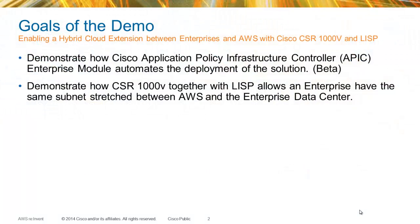The goals of the demo are: first, to demonstrate how the Cisco Application Policy Infrastructure Controller APIC Enterprise Module can be used to automate the deployment of the solution. The APIC EM extensions for the hybrid cloud solution based on LISP on the CSR is currently in beta. Everything else shown in this solution is currently available and ready for production. The second goal is to show how a CSR1000V together with LISP allows an enterprise to have the same subnet stretched between Amazon AWS and an enterprise data center.